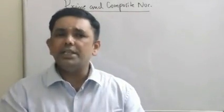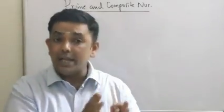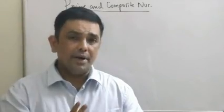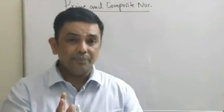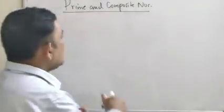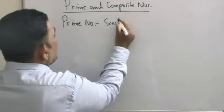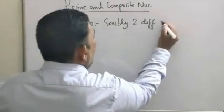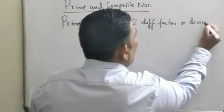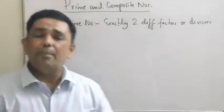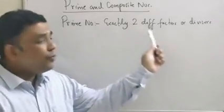If I had asked you this question, possibly many of us would have said that a number which is divisible by one and itself is a prime number. I'm sorry, this definition is not complete — it is not correct. The correct definition of a prime number is: a number which has got exactly two different factors or divisors is a prime number.